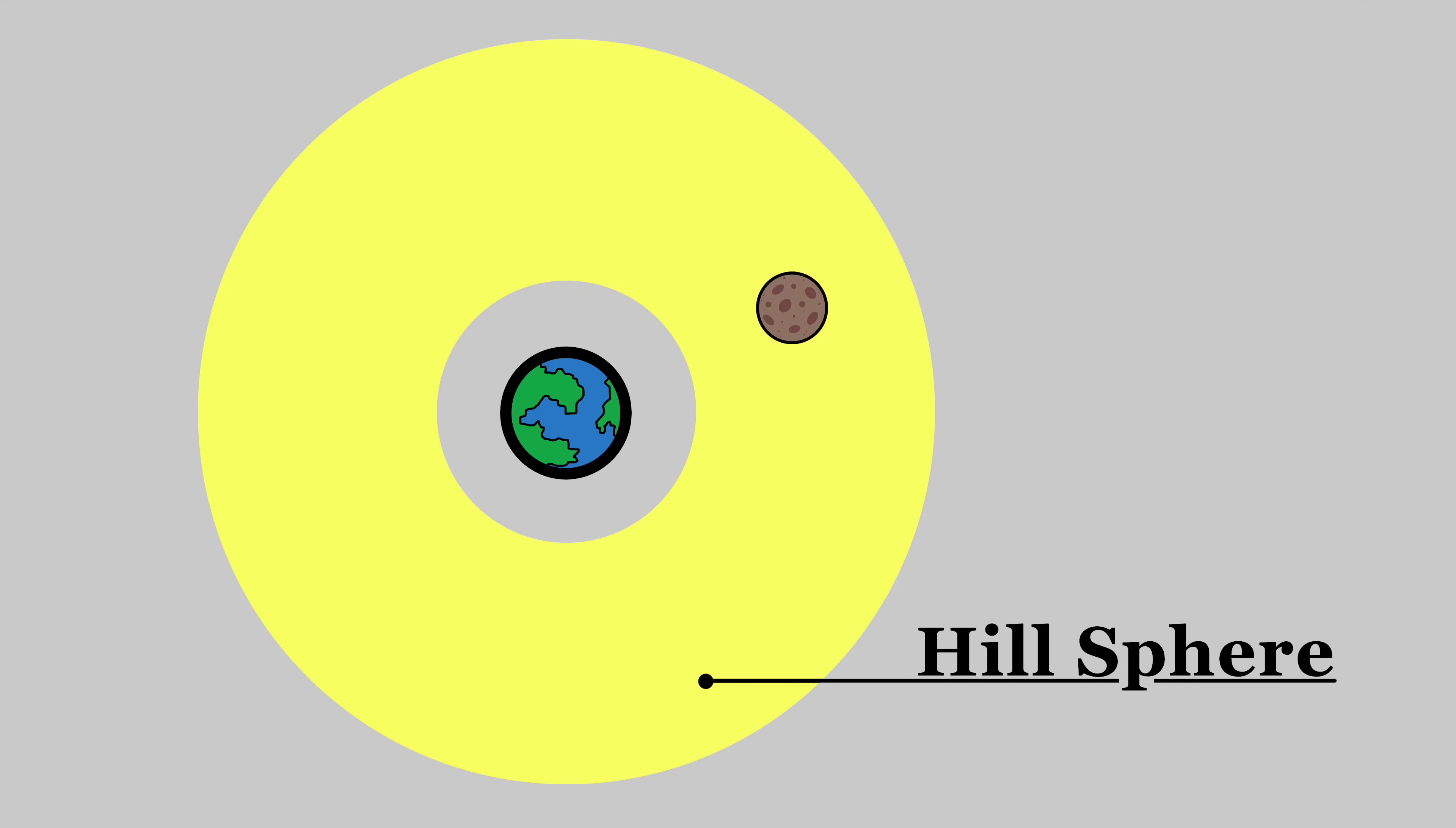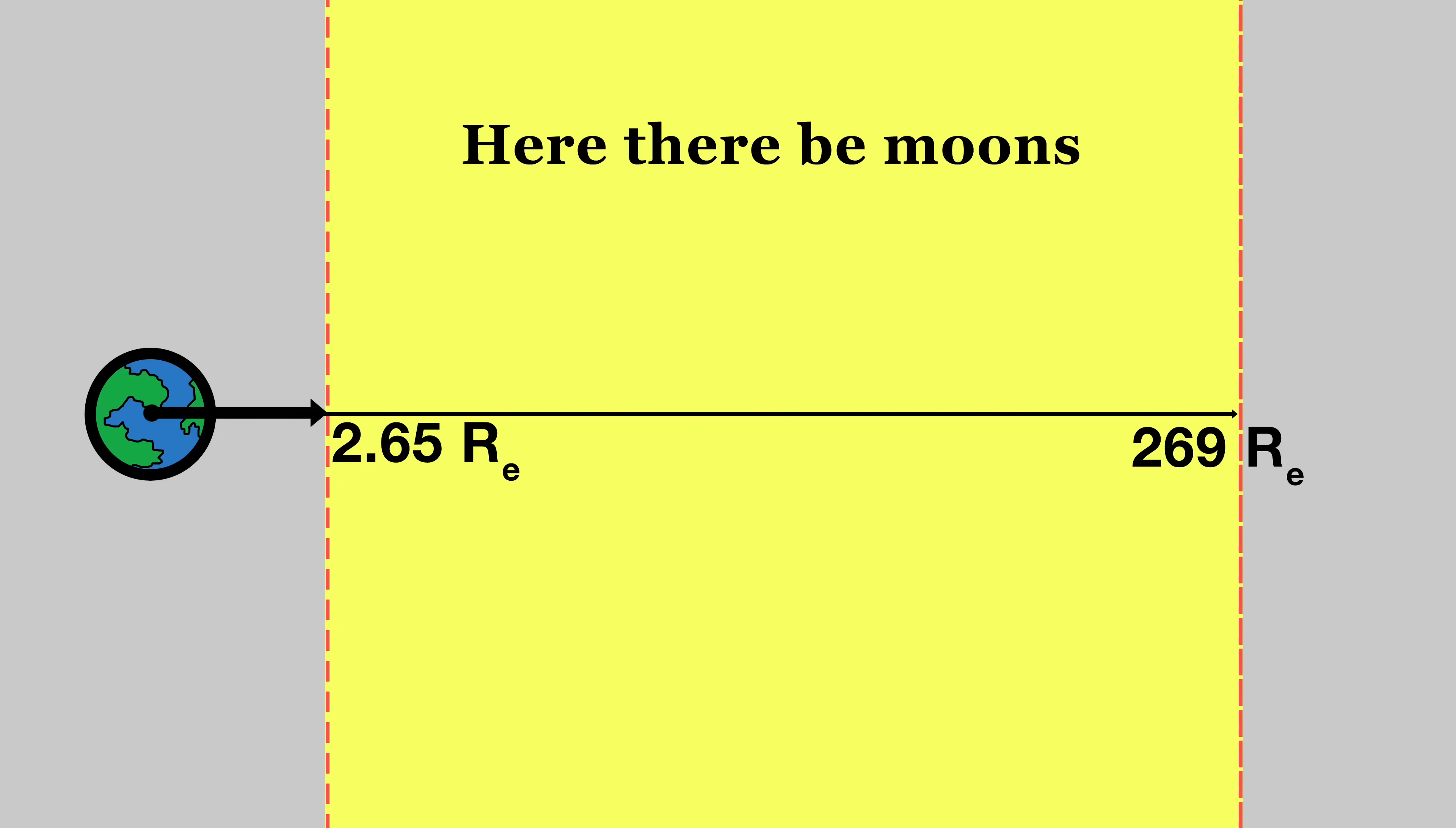Bit of bonus info here is that moons also have hill spheres and Roche limits, meaning it's theoretically possible to construct moons of moons. Regardless, this right here is moon territory.